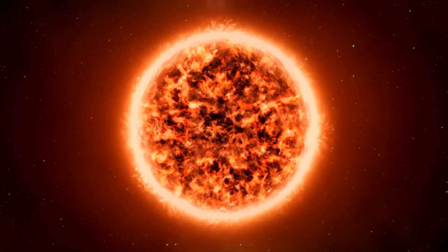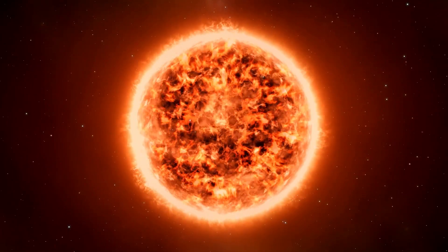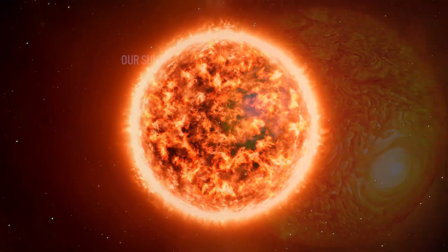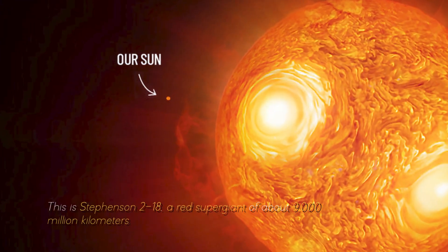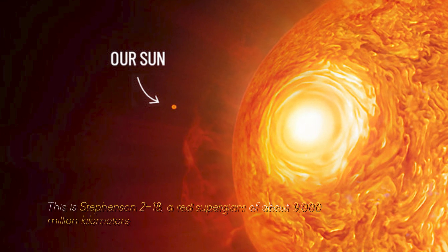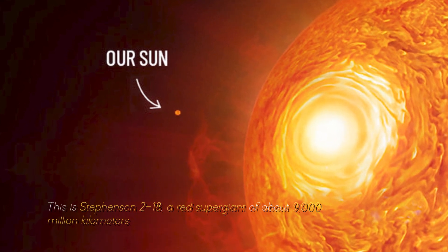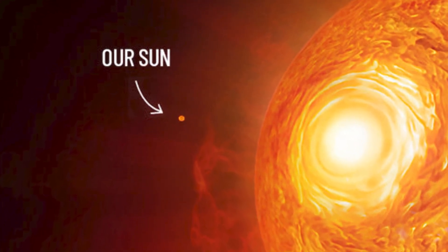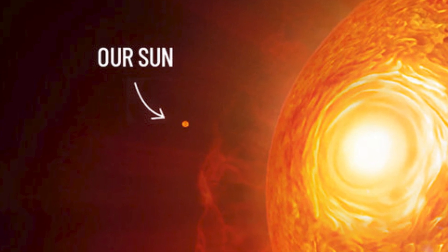Even our sun would also look small if we compare it with the largest star in the universe. This is Stevenson 218, a red supergiant of about 9,000 million kilometers, which looks like this in front of our star, something really spectacular.